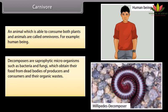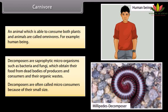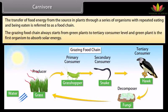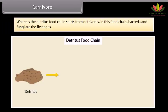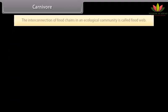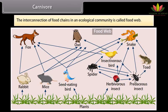Decomposers are saprophytic microorganisms such as bacteria and fungi which obtain their food from dead bodies of producers and consumers and their organic wastes. Decomposers are often called micro-consumers because of their small size. The transfer of food energy from the source in plants through a series of organisms with repeated eating and being eaten is referred to as a food chain. The grazing food chain starts from green plants, while the detritus food chain starts from detrivores. The interconnection of food chains in an ecological community is called a food web.